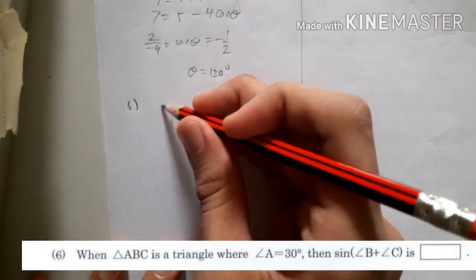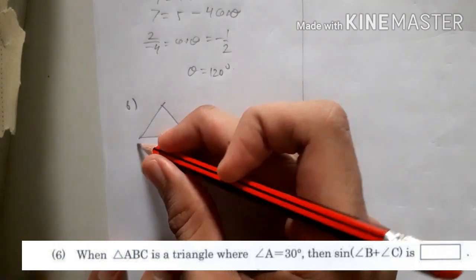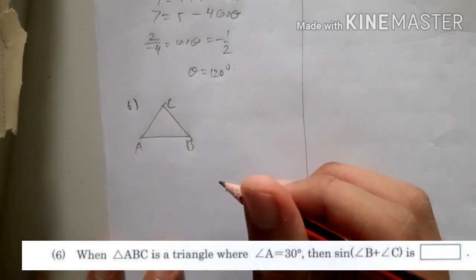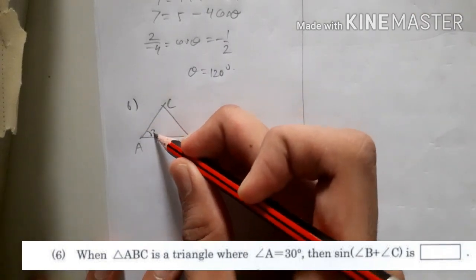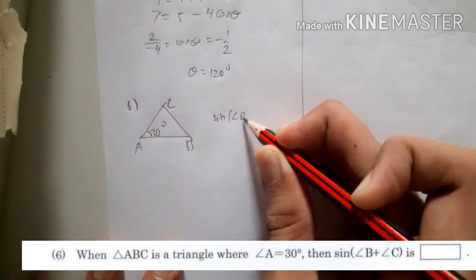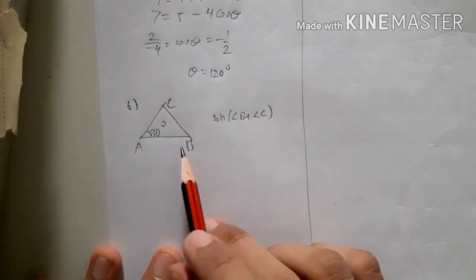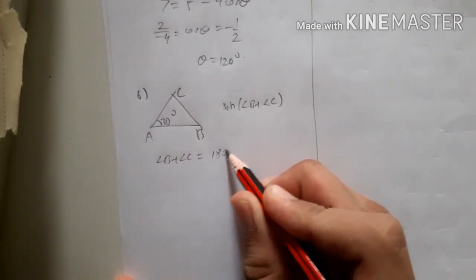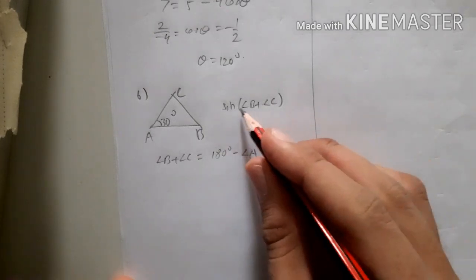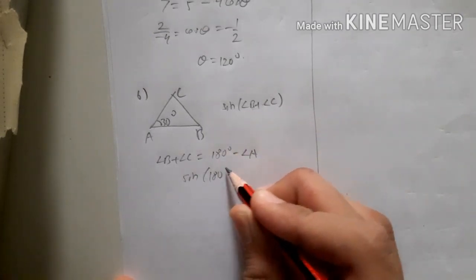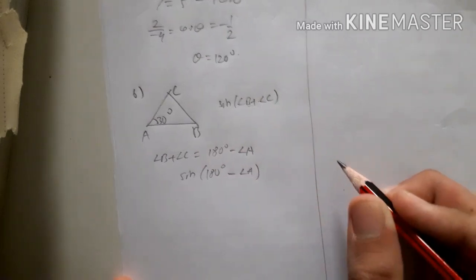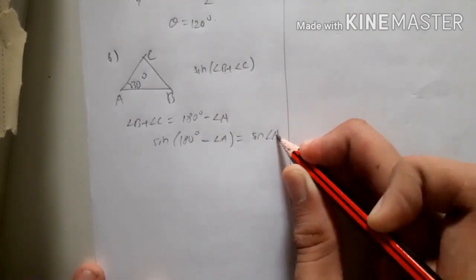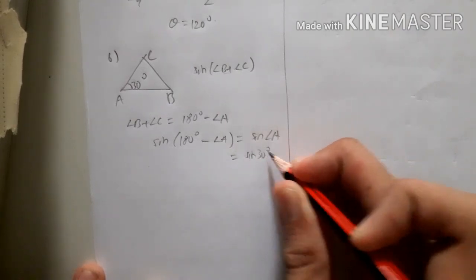Number 6: given triangle ABC where angle A is 30 degrees, find the sine of angle B plus angle C. Since angle B plus angle C equals 180 degrees minus angle A, we substitute: sine of 180 degrees minus angle A. Using the trigonometric identity, this equals sine of angle A, which is sine 30 degrees, so the answer is one-half.